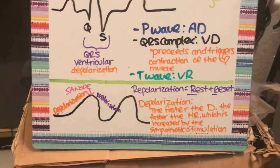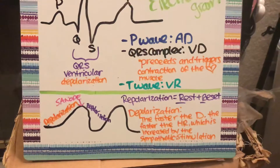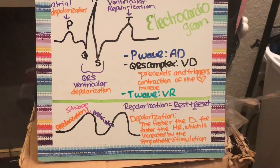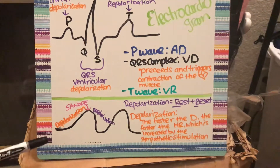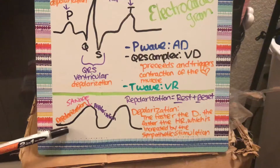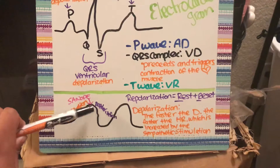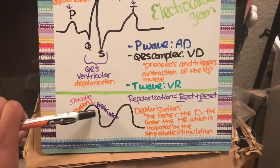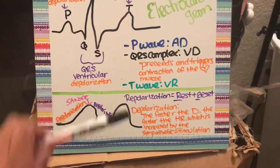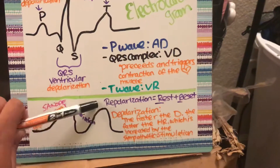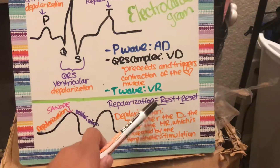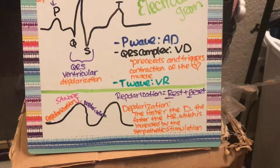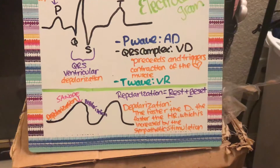The SA node is the pacemaker of the heart. As the signal is ramping up, that's your depolarization — the SA node fires. Then you go down into repolarization, which is rest and reset.